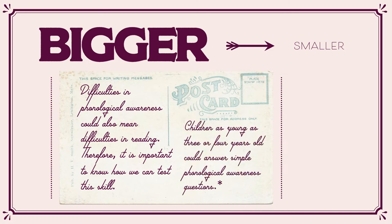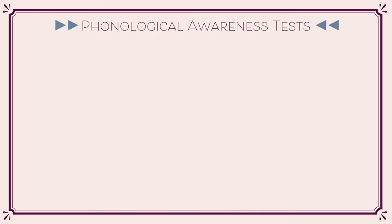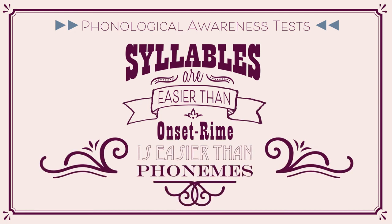Children as young as 3 or 4 years old could answer simple phonological awareness questions. There are many types of tests — some are easier or harder than others. When testing for phonological awareness, tests where children have to focus on syllables are usually easier than focusing on the onset rhyme level. Focusing on the onset rhyme level is easier than focusing on phonemes. This also depends on the language or languages that children speak and read.